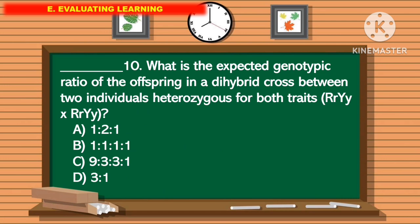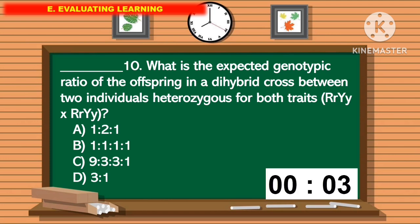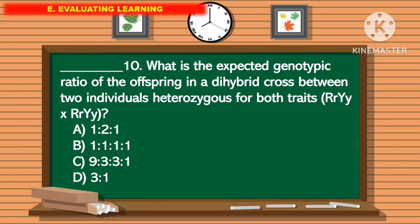For question number 10, what is the expected genotypic ratio of the offspring in the dihybrid cross between two individuals heterozygous for both traits? The correct answer is letter C.